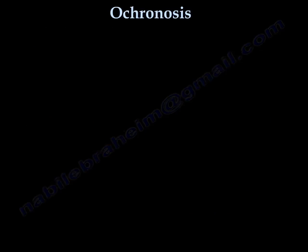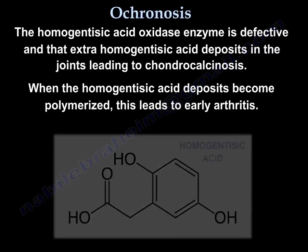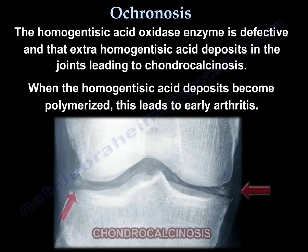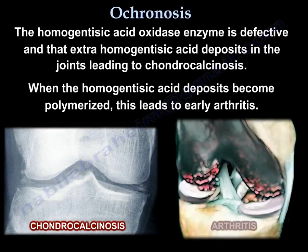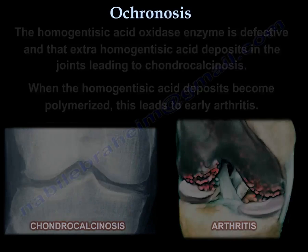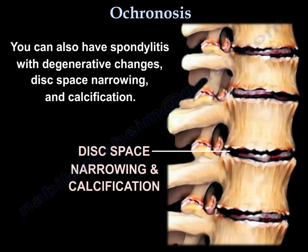What happens is the homogentisic acid oxidase enzyme is defective, and that extra homogentisic acid deposits in the joints, leading to something like chondrocalcinosis. When it polymerizes, it leads to early arthritis. You can also have spondylitis with degenerative changes, disc space narrowing, and calcification.